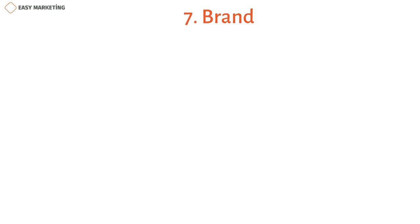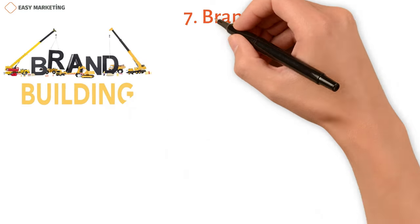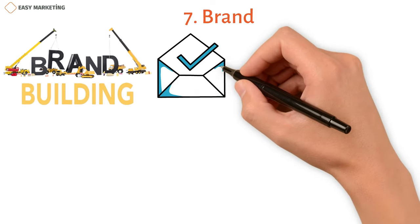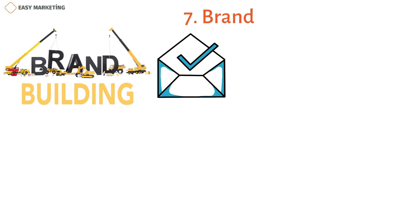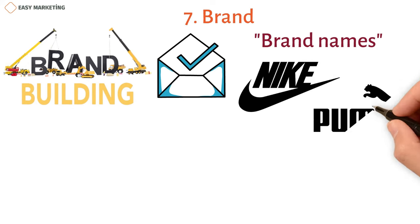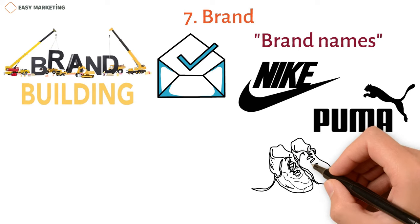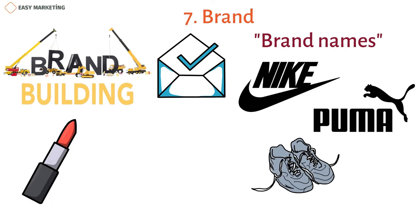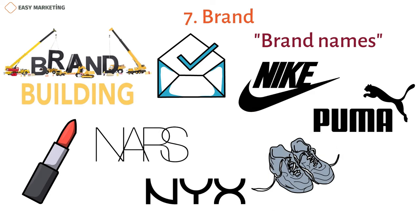Number seven: brand building. Brand building is one of the best ways to get your marketing message across. You may have noticed that a lot of people call things by their brand names instead of what they are — for example, calling them 'my Nike' or 'my Puma' instead of 'my sneakers,' or calling lipsticks by brand names like NARS Velvet instead of just 'lipstick.'